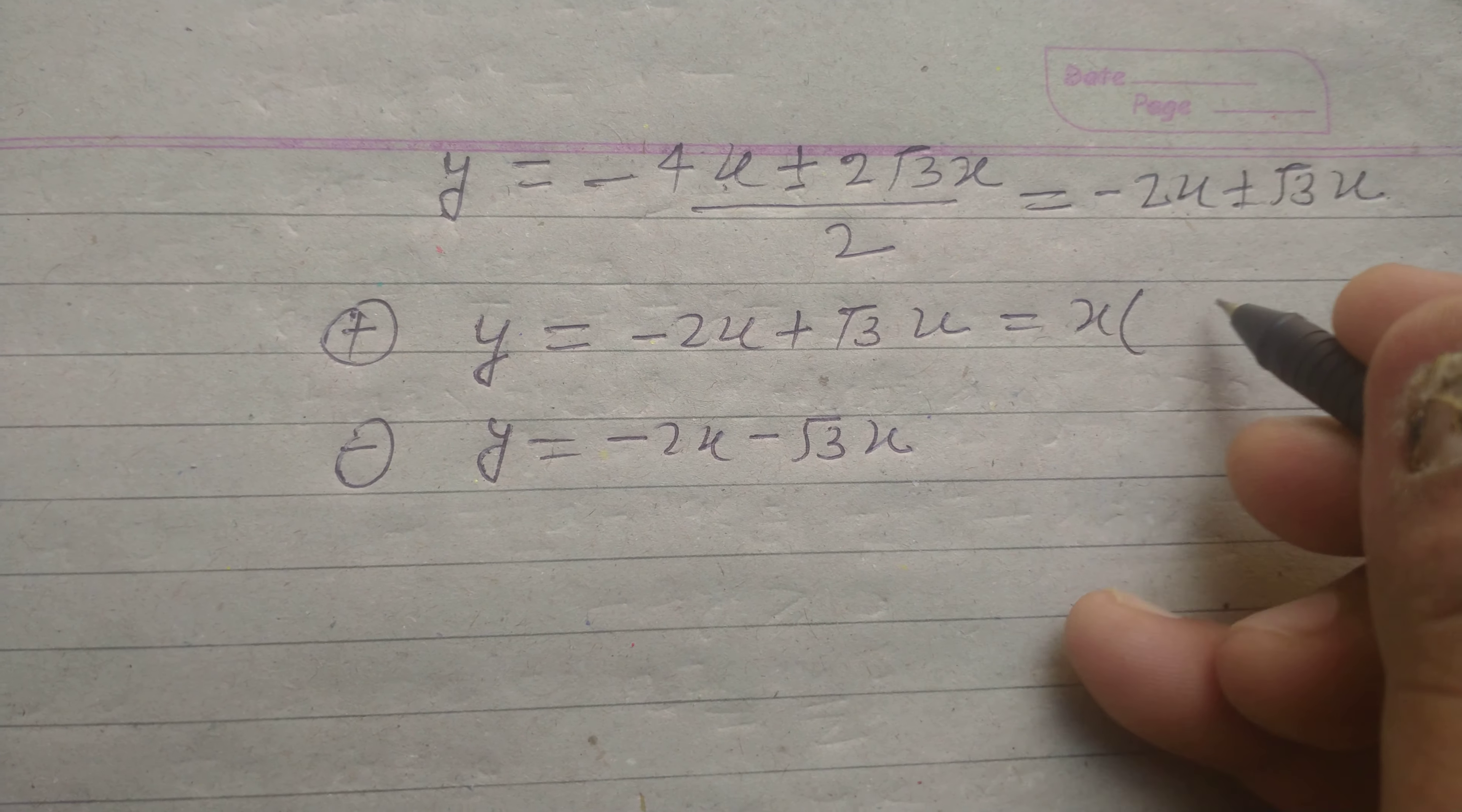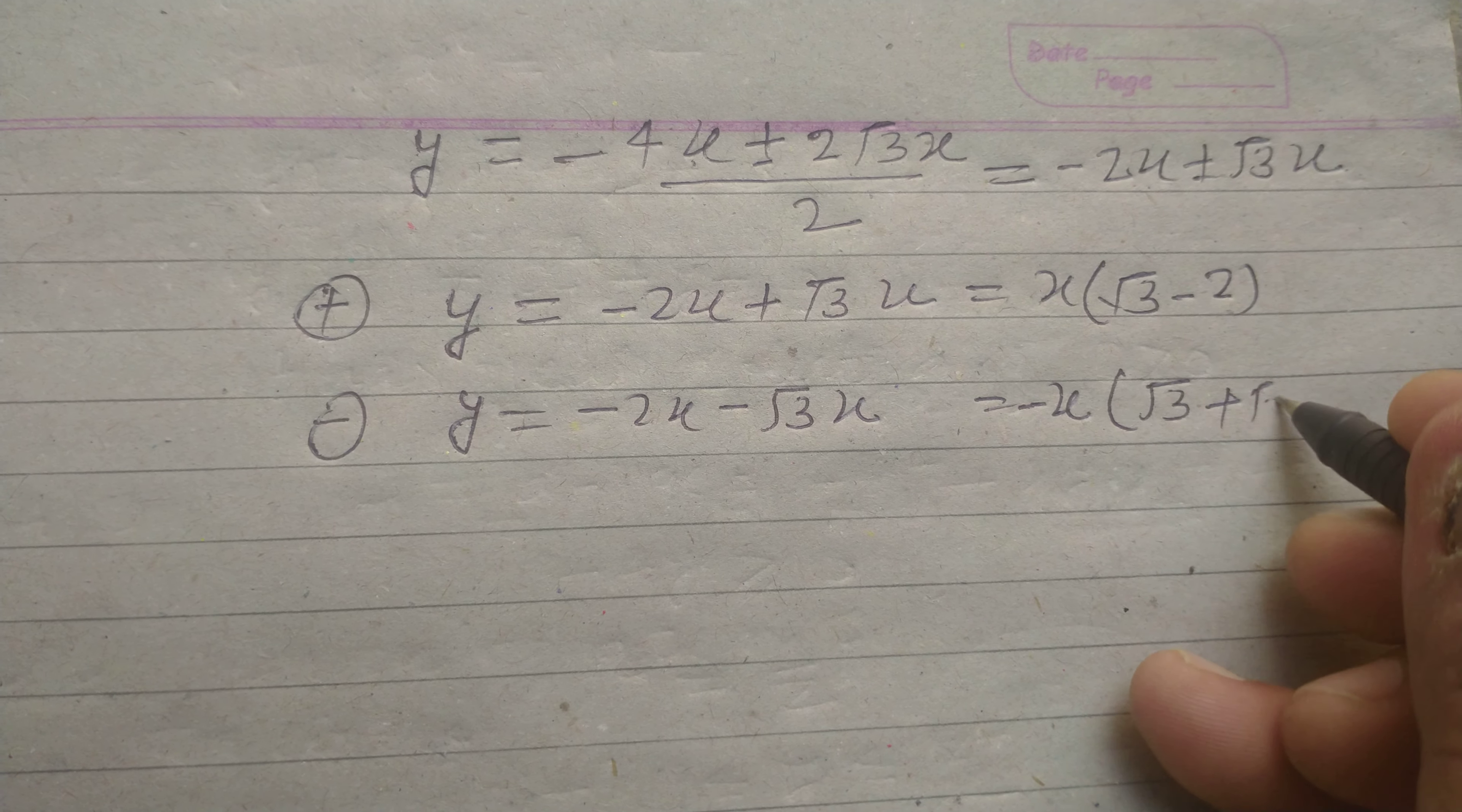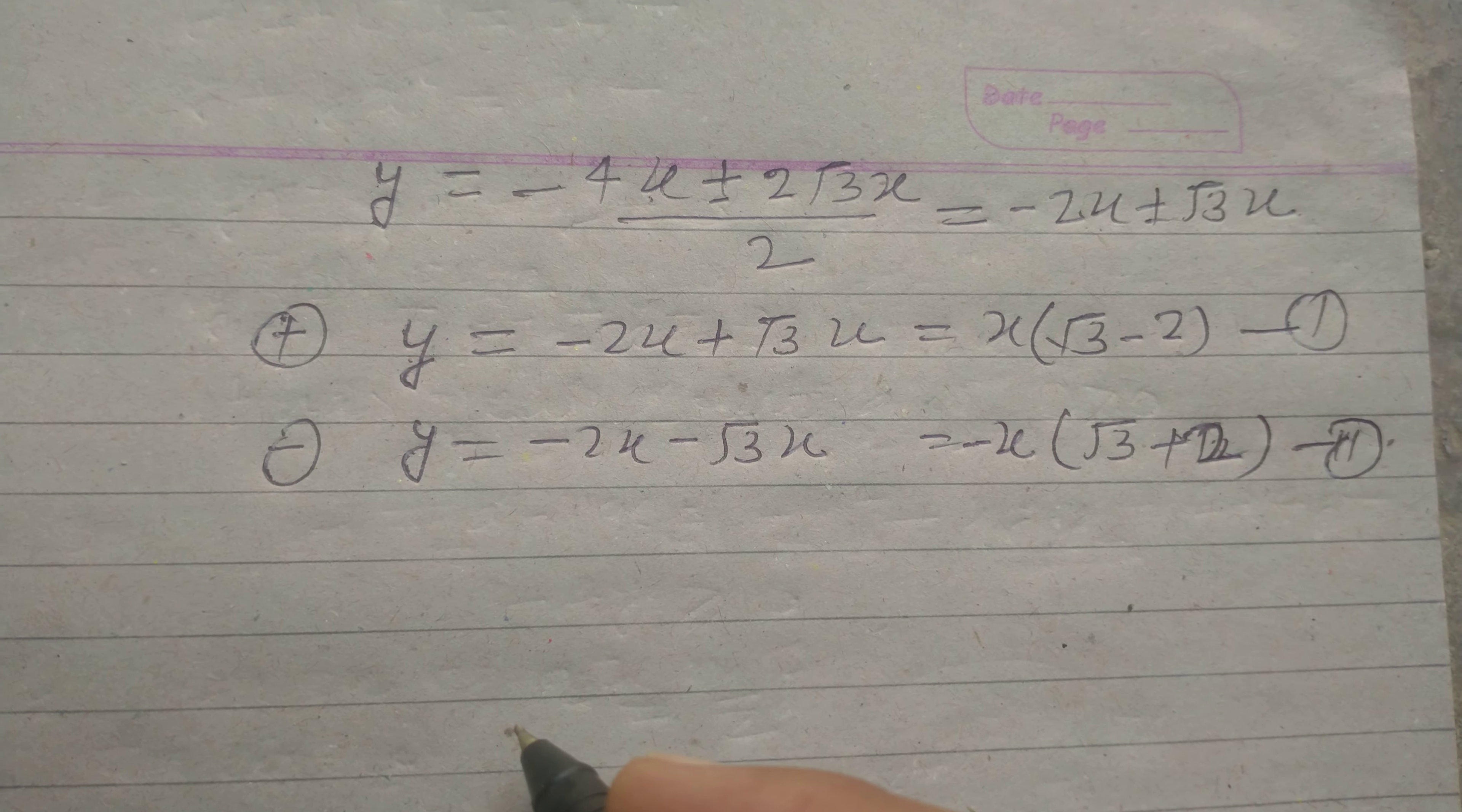So from this, (√3 - 2)x and minus (√3 + 2)x. So this is √3x - 2x and -√3x - 2x. So this is the first equation and this is the second equation.